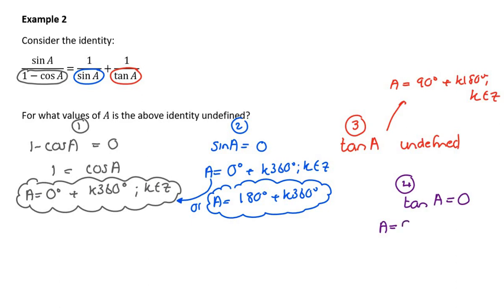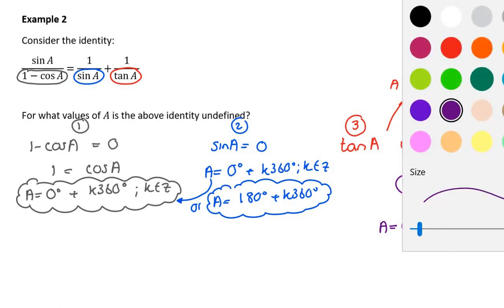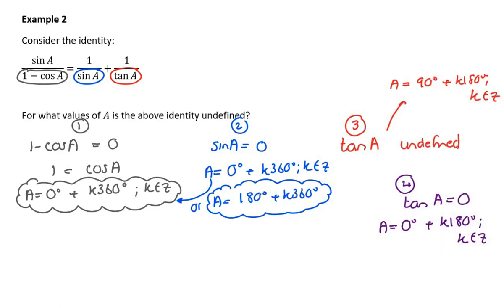Yeah. So that's 0 plus k180, which I think I've already kind of said. So how can you amalgamate these all down into one thing? Well, basically, I've got 0, I've got 180, I've got 90, and I've got 0. So basically, I could probably rattle these all down to 0 degrees plus k90, I think. So 0 degrees plus k90, k is an element of integers.